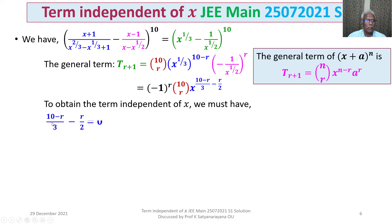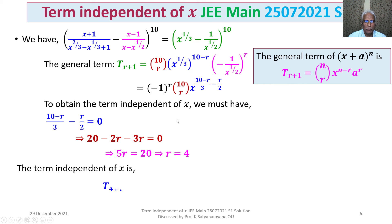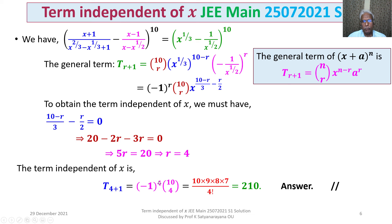To obtain the term independent of x, the exponent of x must equal zero: (10−r)/3 − r/2 = 0. Simplifying gives 5r = 20, so r = 4. The term independent of x is T5, which equals (−1)^4 × 10C4 = 10C4 = (10 × 9 × 8 × 7) / 4! = 210.